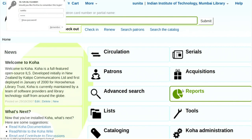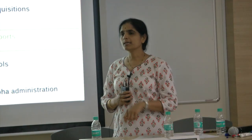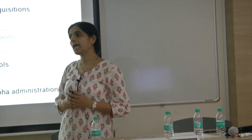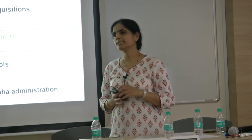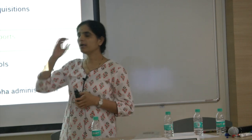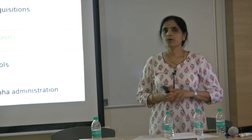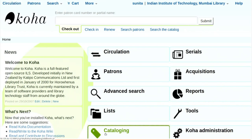Now we have to catalog that book. If a library is big, some people will do only acquisition, some people will do only accessioning, and some people will do cataloging of those books. Or if only one librarian is there, only one person will carry out all the tasks. Now we have to go to cataloging and click on cataloging.